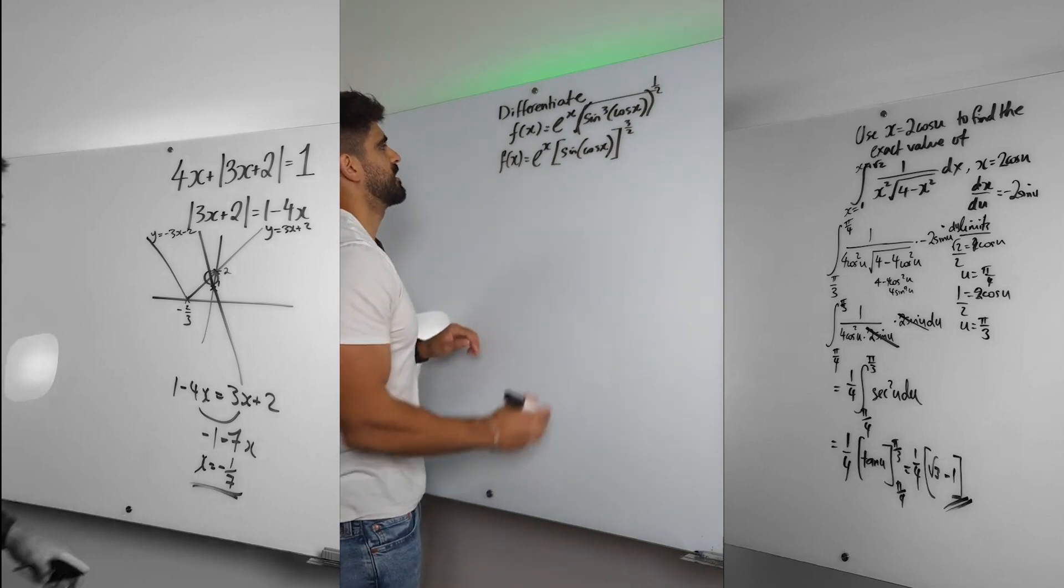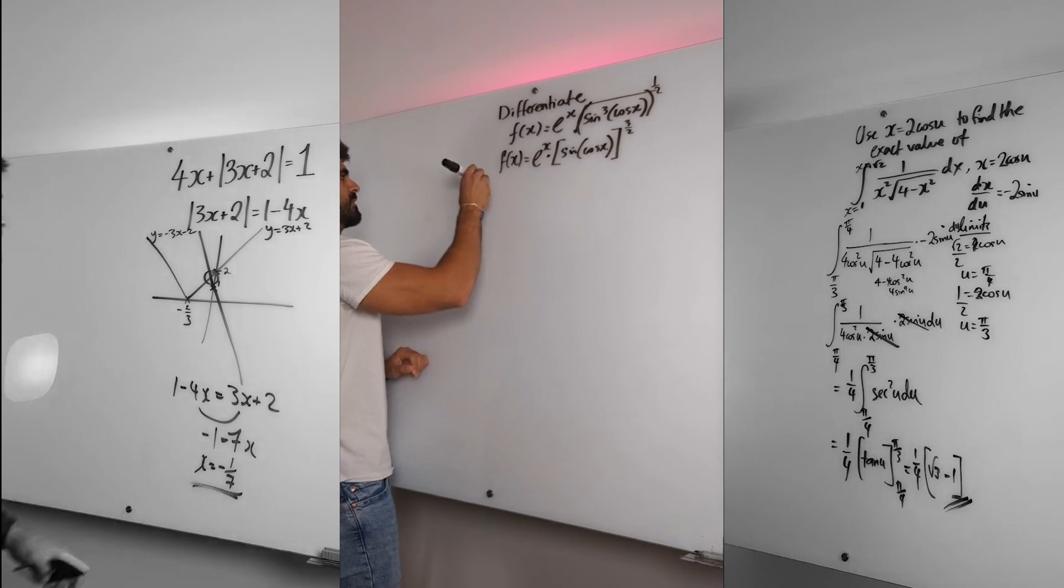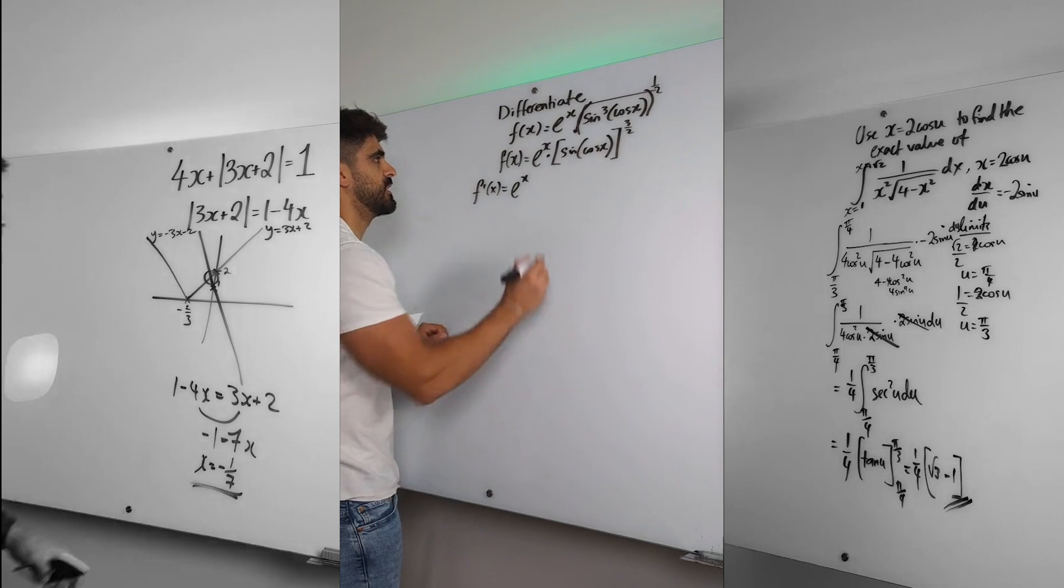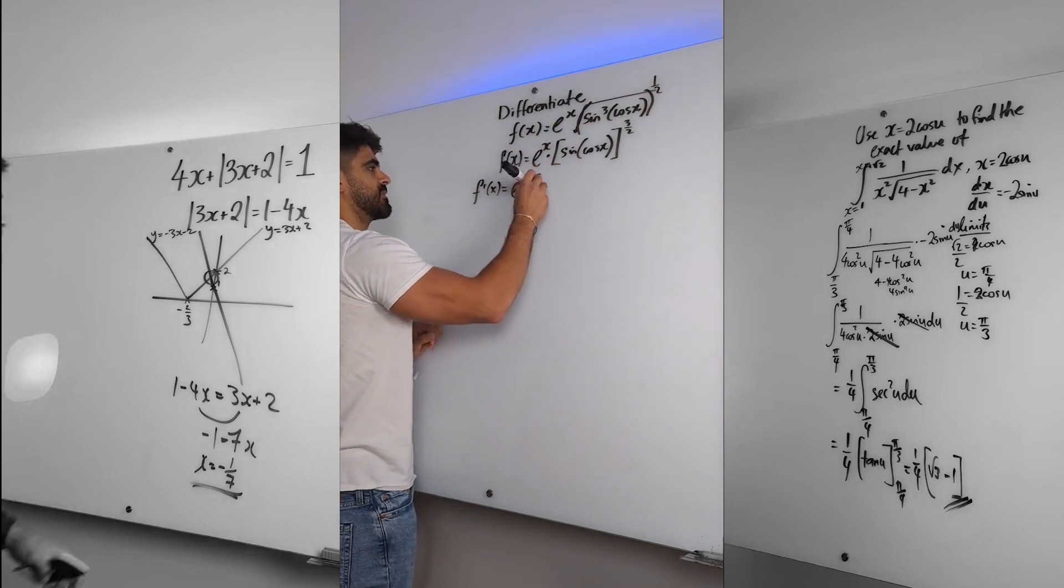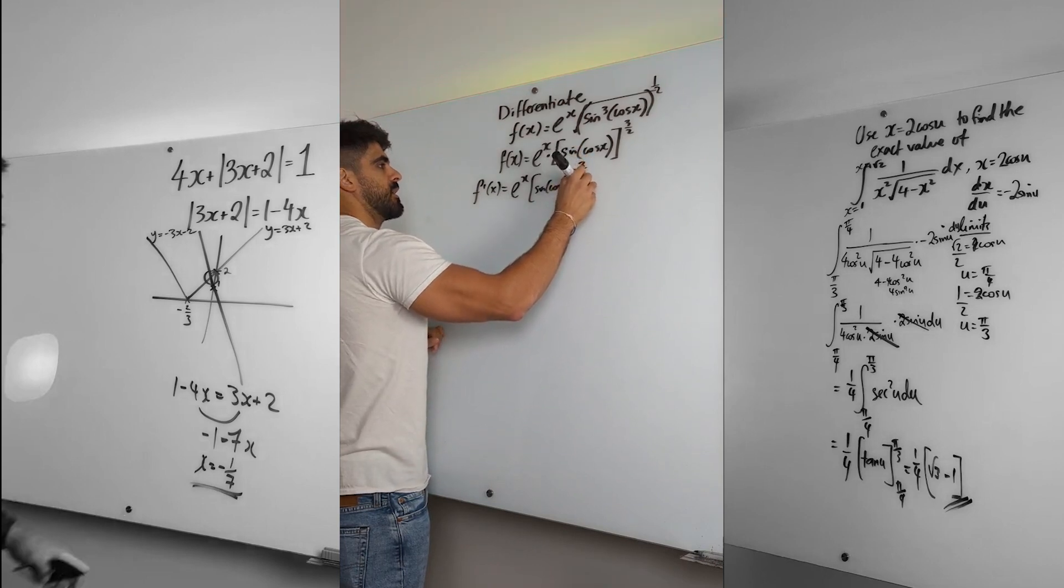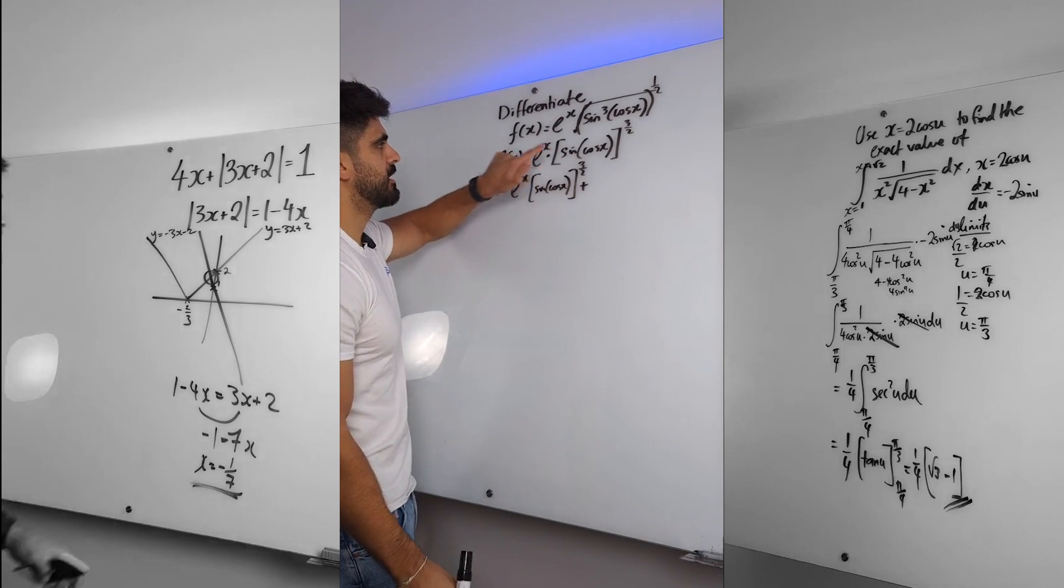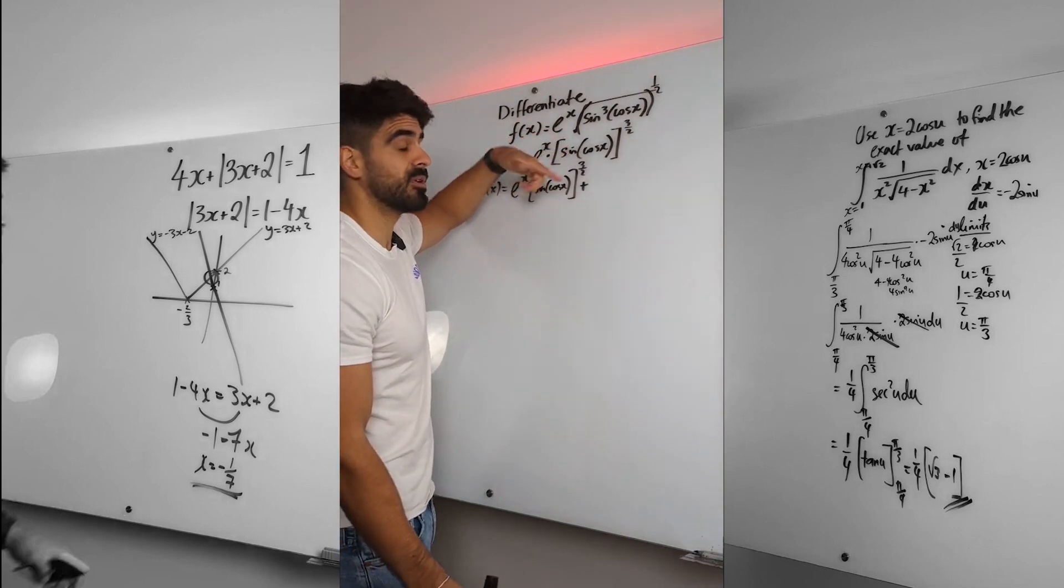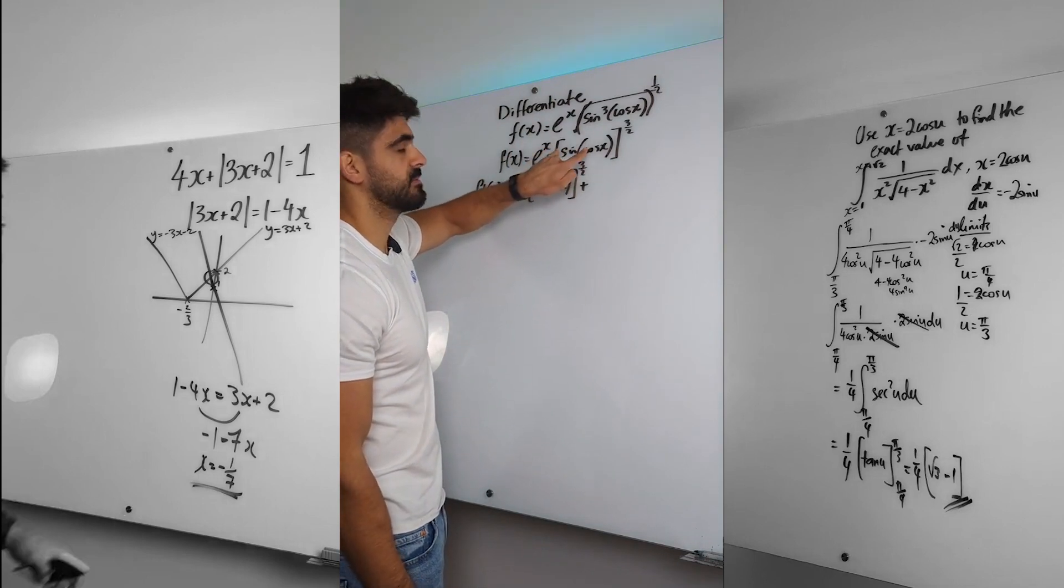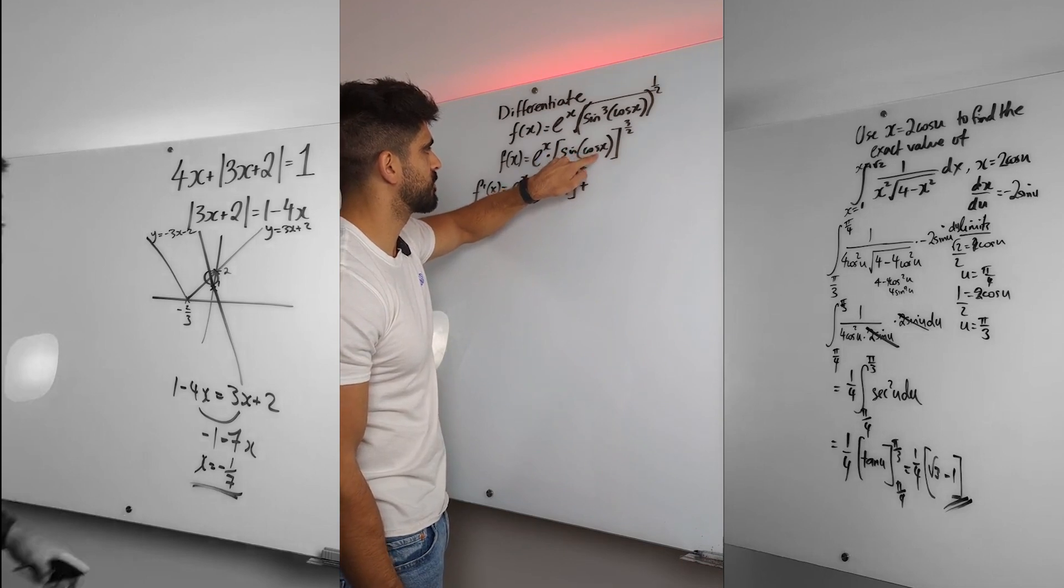So how do you differentiate this? We're going to use product rule because we're multiplying two functions together. How does it work? You differentiate the first term, e to the x differentiates to itself, multiply by the second term. Plus, differentiate the second term. This is where things get juicy. How do we differentiate pavan functions? Well, the first thing you do, in general, you bring down the power, knock one off the power. But you have to adjust for the fact that there's something going on inside, so we need to differentiate that first. So we have to differentiate sine of cos x first.